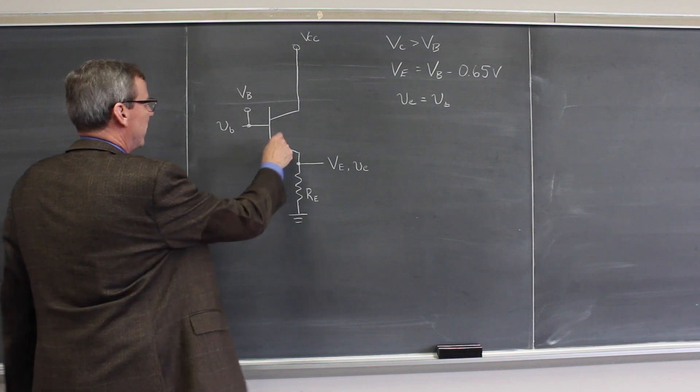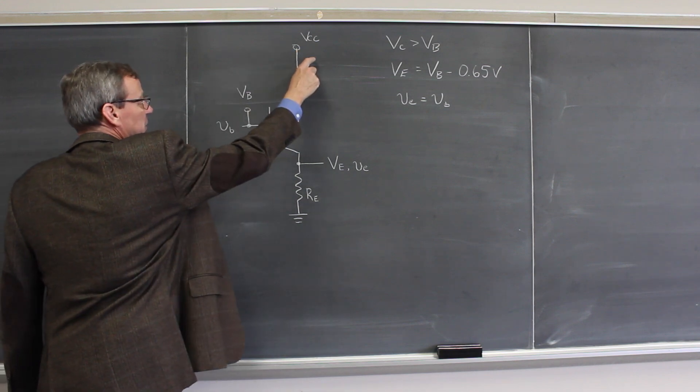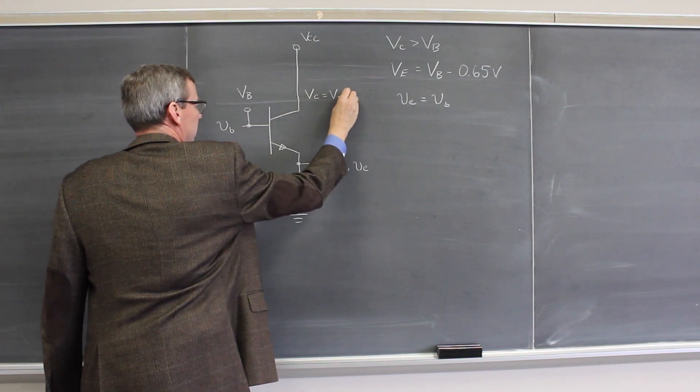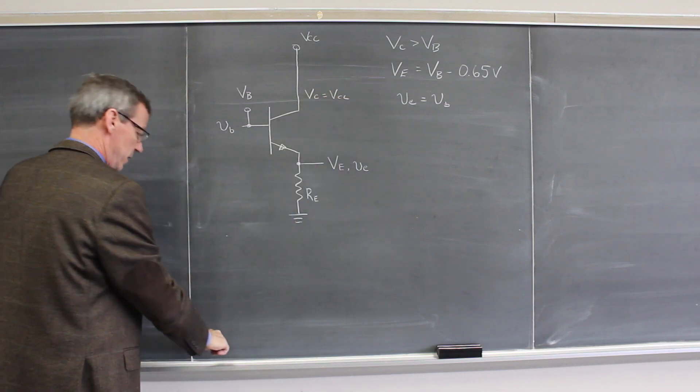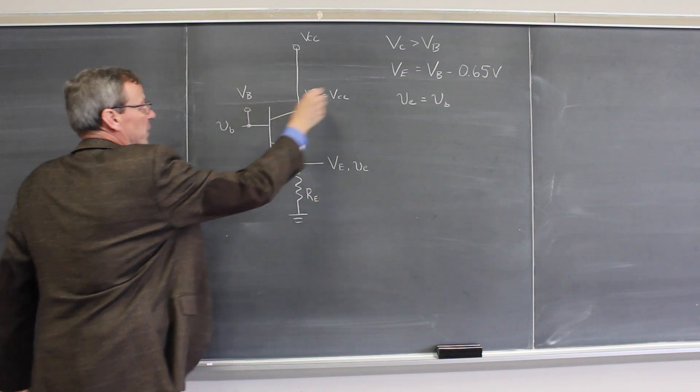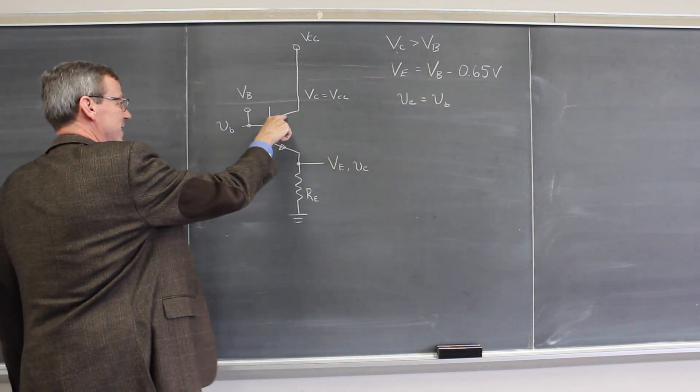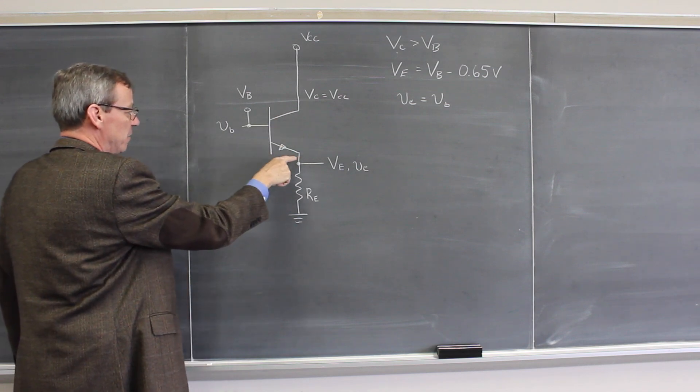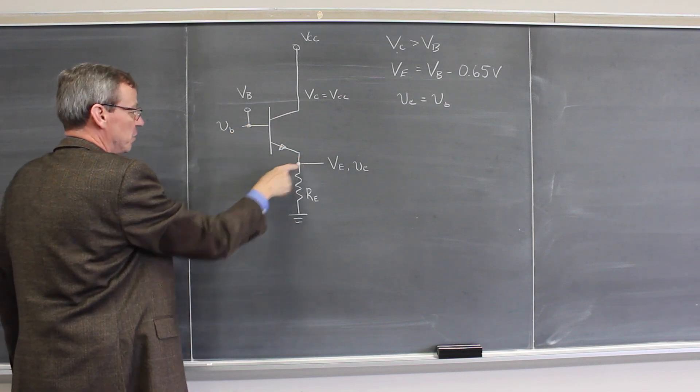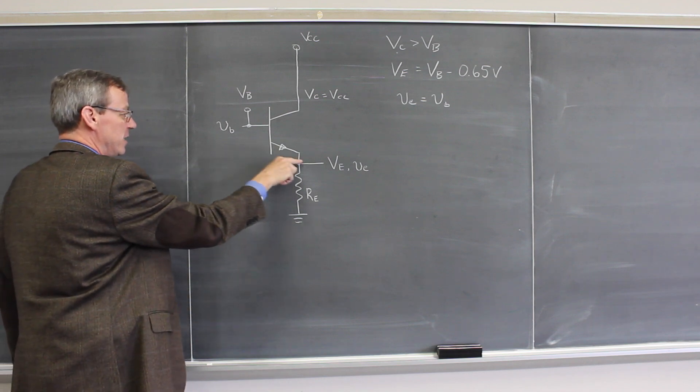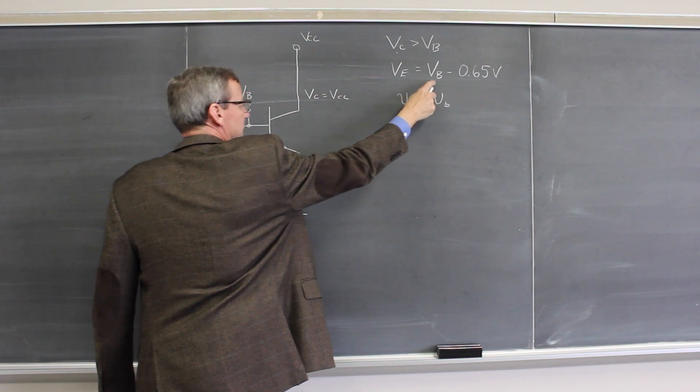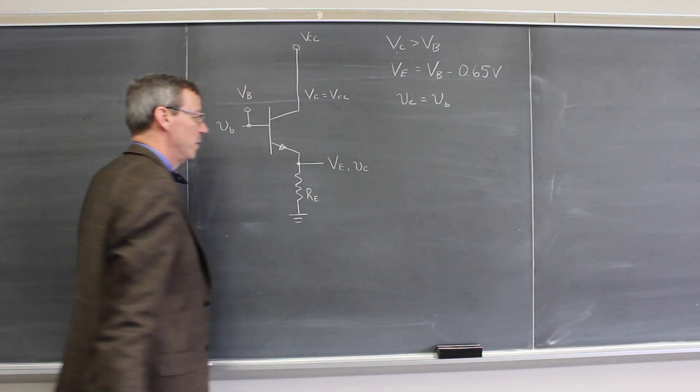We have a correctly biased transistor, so there's a collector voltage Vcc, giving us a voltage Vc equals Vcc on the collector. The collector voltage is greater than the base voltage, so the diode that is apparently inside of here is reverse biased. This diode is forward biased, so the base voltage is greater than the emitter voltage, and you get a diode drop across here, so the emitter voltage DC level is the base minus one diode drop, 0.65 volts.